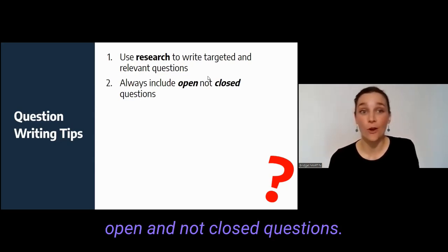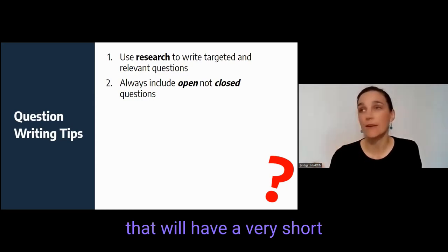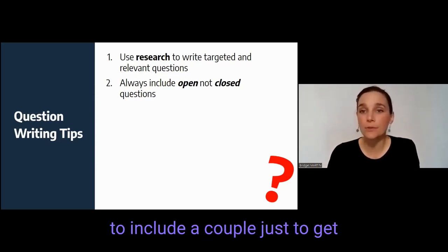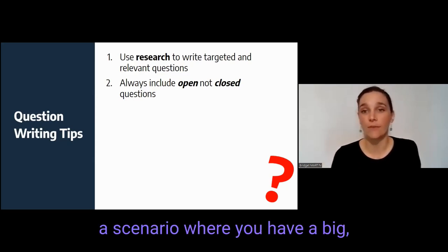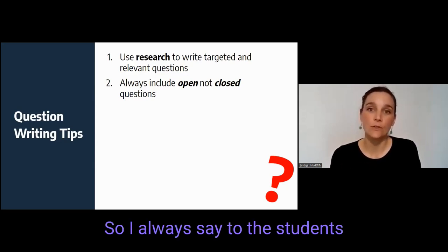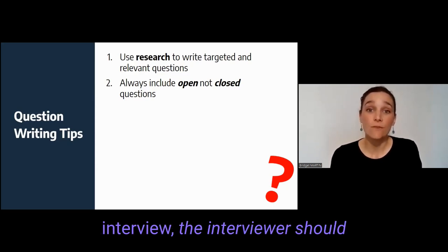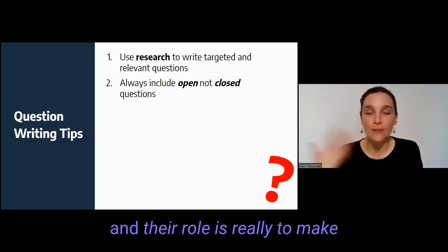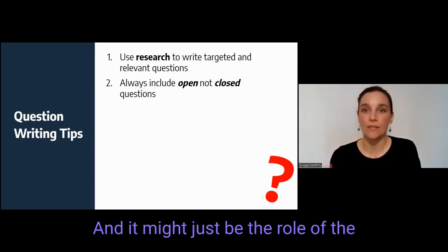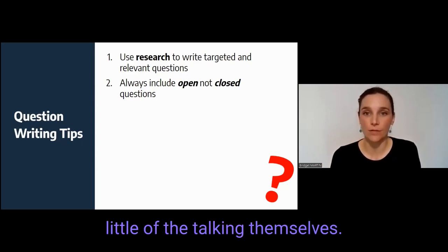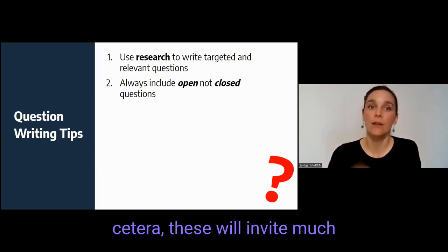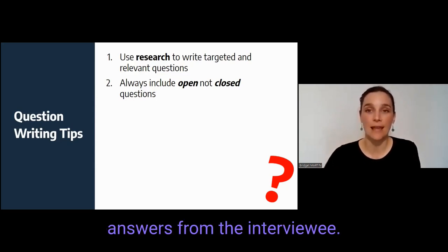Students should always be asking open and not closed questions. A closed question is one that will have a very short answer like '1961' or 'yes' or 'no.' Occasionally you might need to include a couple just to get some contextual details, but you definitely want to avoid a big long series of closed questions because you won't get that dialogue which is what we're looking for in an oral history interview. The interviewer should do almost none of the talking — their role is to make sure the interviewee is able to share their experiences and memories. Open questions — could you tell me about, can you describe, why did — will invite much broader and more developed answers.